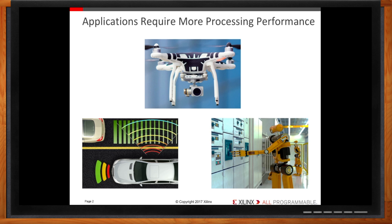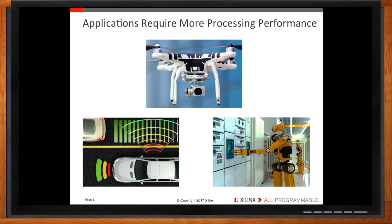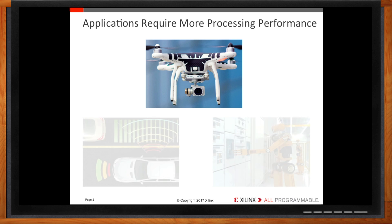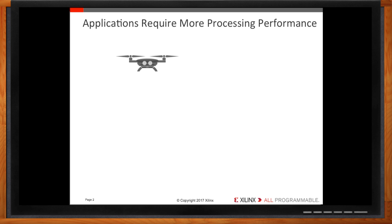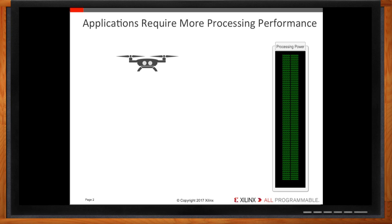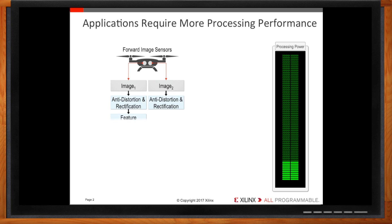How much processing performance do we really need? Well, that depends on the application. Let's take a look at an autonomous delivery drone as an example. In order to navigate to its destination, the drone must see its surroundings to fly unimpeded and avoid obstacles. This requires an array of sensors working in unison to provide at least a 180-degree field of view. Let's look at a pair of front-facing image sensors. Each image must be pre-processed separately, taking up processing cycles. These images are merged into a 3D view, consuming even more processing cycles.